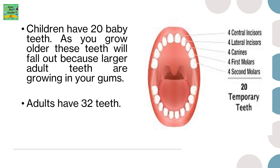Children have 20 baby teeth. As you grow older, these teeth will fall out because larger adult teeth are growing in your gums. Adults have 32 teeth.